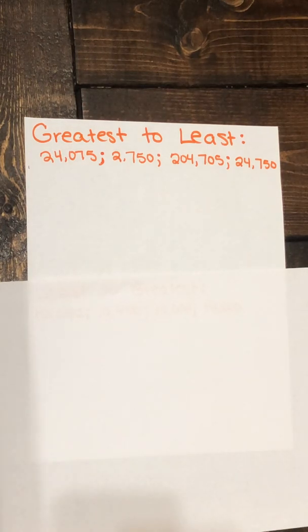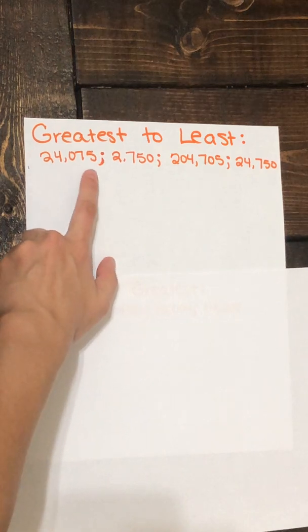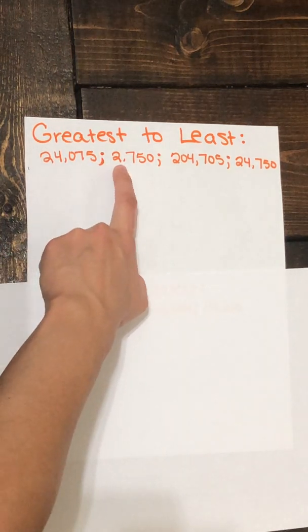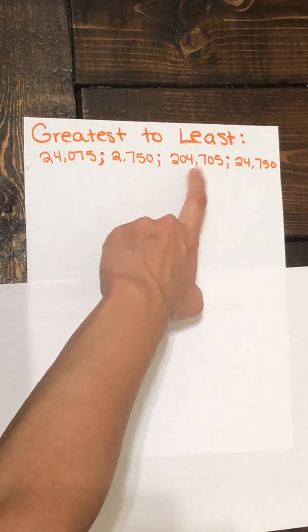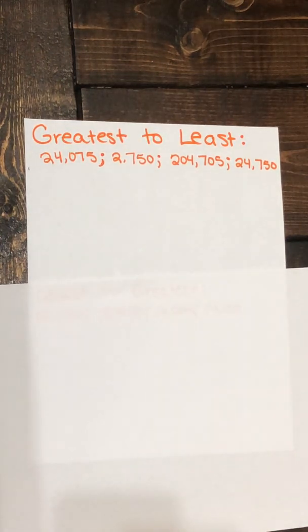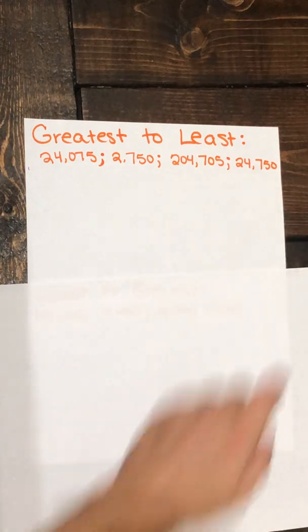So let's read our four numbers. We have 24,075. We have 2,750. We have 204,705 and we have 24,750.